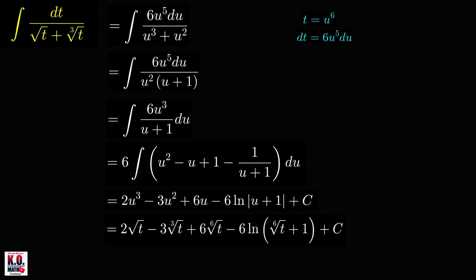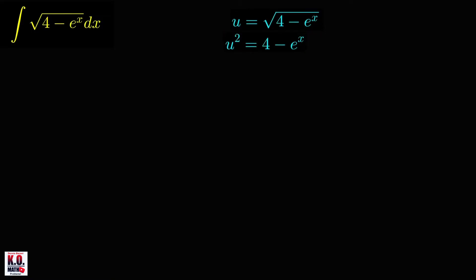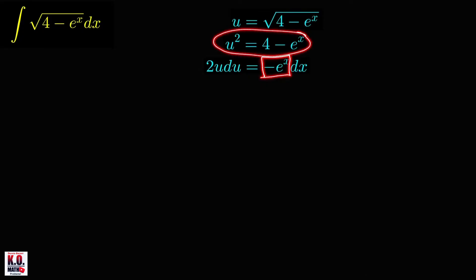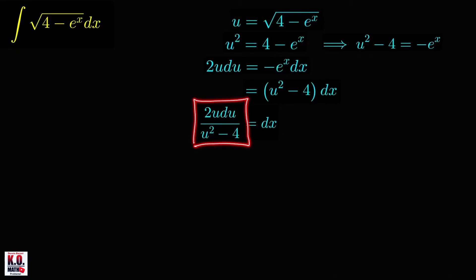Let's look at the next integral. For this integral, we can use the substitution u equal to the square root of 4 minus e to the x. Squaring both sides gives u squared equal to 4 minus e to the x, so 2u du equals negative e to the x dx. From the second equation, u squared minus 4 equals negative e to the x. Therefore, we can write dx as 2u du over u squared minus 4.